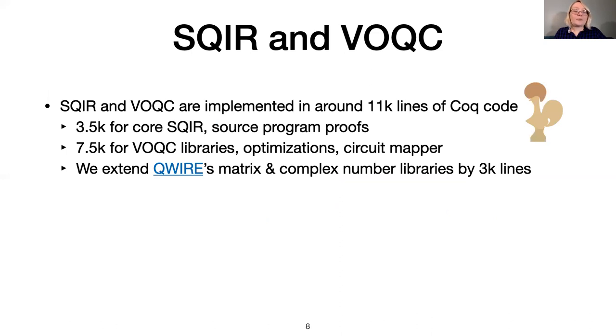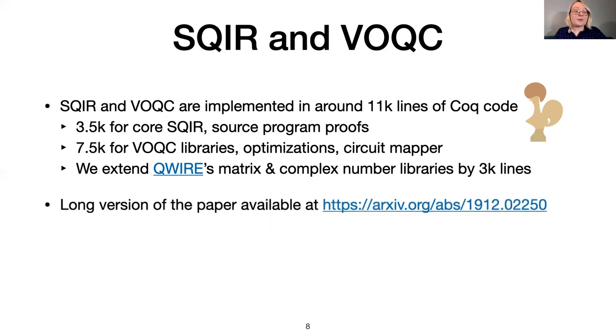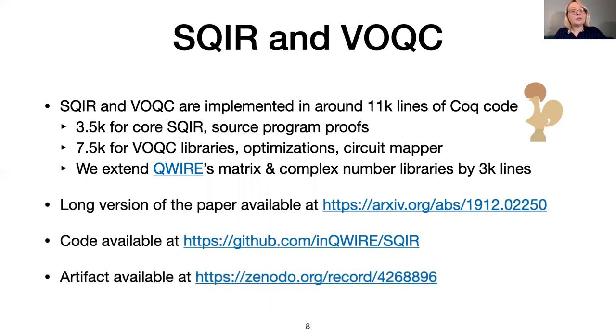We implement and verify optimizations in Coq. The SQUIRE language and semantics, with example programs, is implemented in around 3,500 lines. Our VOQC library for manipulating SQUIRE programs and our verified optimizations are around 7,500 lines. We build on top of the matrix and complex number libraries developed for the QWIRE project, extending them as needed with new lemmas and automation. The long version of our paper is available on arXiv. Our code is available on GitHub. And our artifact, which includes a virtual machine with dependencies pre-installed and SQUIRE and VOQC pre-compiled, is available on Zenodo.